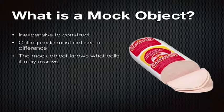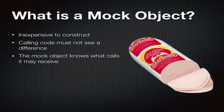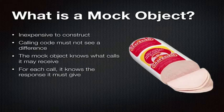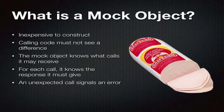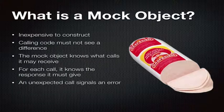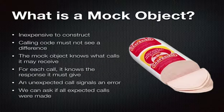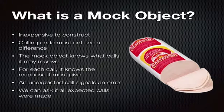An important part of what a mock object is: it must know what calls it may receive. You must be able to tell it you will receive these calls and not those. For each call, it has to know the response it must give. If it gets a call it was not expecting, it has to signal an error. But also, you have to be able to ask it: were all your expectations met? Did all the calls that were supposed to be made actually get made?